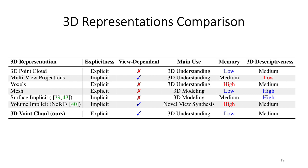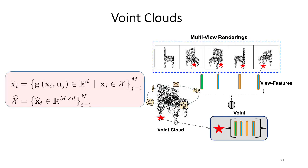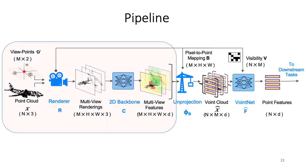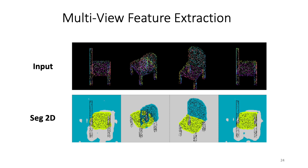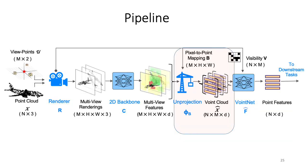In this table from the paper, we compare our Voint Cloud to different representations like point clouds, NeRFs, and voxels. Our pipeline consists of a renderer R that renders point clouds X from different viewing angles U. The resulting images are processed by a 2D backbone that extracts features per image, obtained by pre-training the backbone for segmentation or classification. We then unproject these 2D features into Voint Cloud features using the differentiable module Phi_B, which uses the mapping B created by the renderer to lift 2D features to Voint Cloud features.